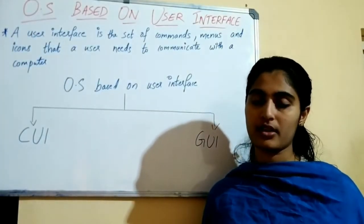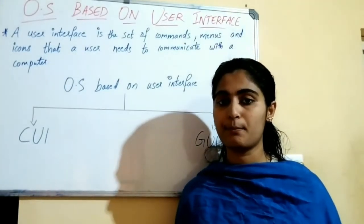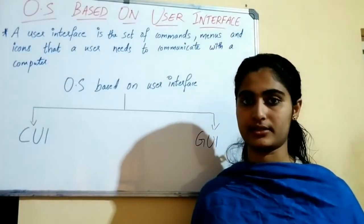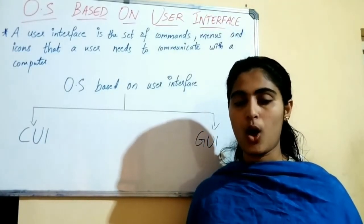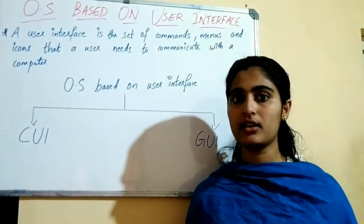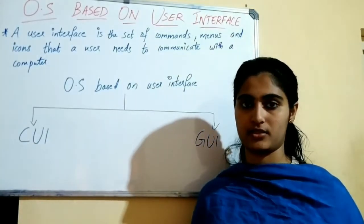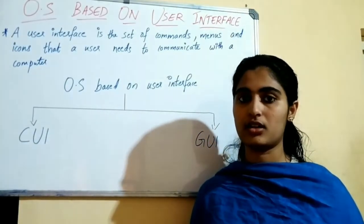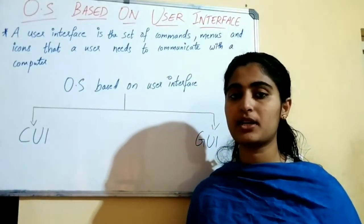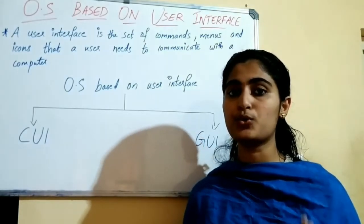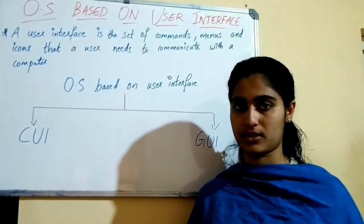User interface is an important part of an operating system — the operating system becomes complete only with the user interface. The operating system is software that works in the background; what we users can see is the user interface. With the user interface, the operating system becomes more attractive and user-friendly, making things easier for users.